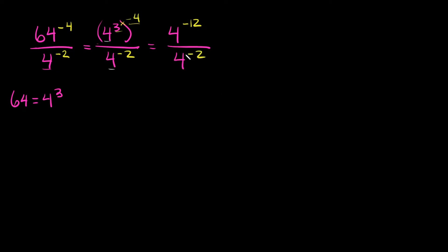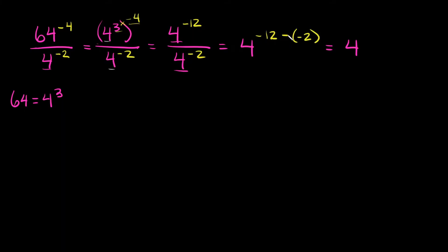So in order to divide these — we have the same base — first let's simplify the top: 4 cubed raised to the negative 4th power. I have a power raised to another power, so I multiply: 3 times negative 4 is equal to negative 12. So we have 4 raised to the negative 12th power over 4 raised to the negative 2nd power. Keep the 4 and subtract the exponents: negative 12 minus negative 2. Minus negative 2 is the same as negative 12 plus 2, which equals negative 10. So we have 4 raised to the negative 10th power.